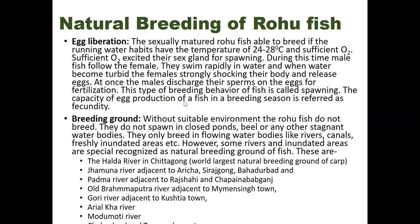Fecundity is the capacity of egg production in a breeding season. The fecundity of a 1 kg Rui fish is 0.1 to 0.4 million eggs per breeding season. Rui fish do not spawn in closed ponds, beels, or stagnant water bodies — they only breed in flowing, turbid, freshwater. That is why they choose the rainy season and breed in rivers, canals, and freshly inundated areas.